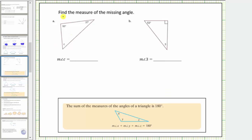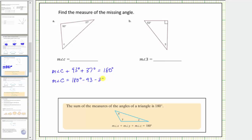Looking at a, we're given two of the three interior angles of the triangle, and therefore the measure of angle c plus 93 degrees plus 37 degrees must equal 180 degrees. To determine the measure of angle c, we begin with 180 degrees, subtract 93 degrees, and then subtract 37 degrees. 180 minus 93 minus 37 equals 50, and therefore the measure of angle c is 50 degrees.